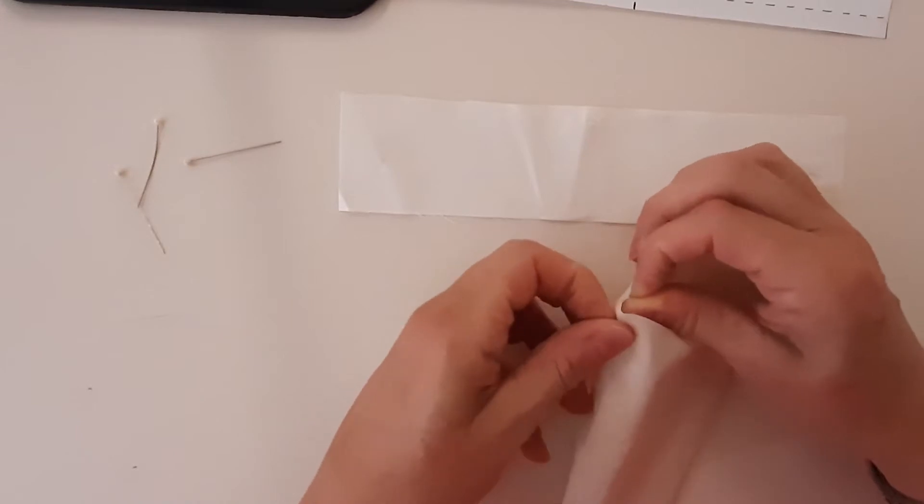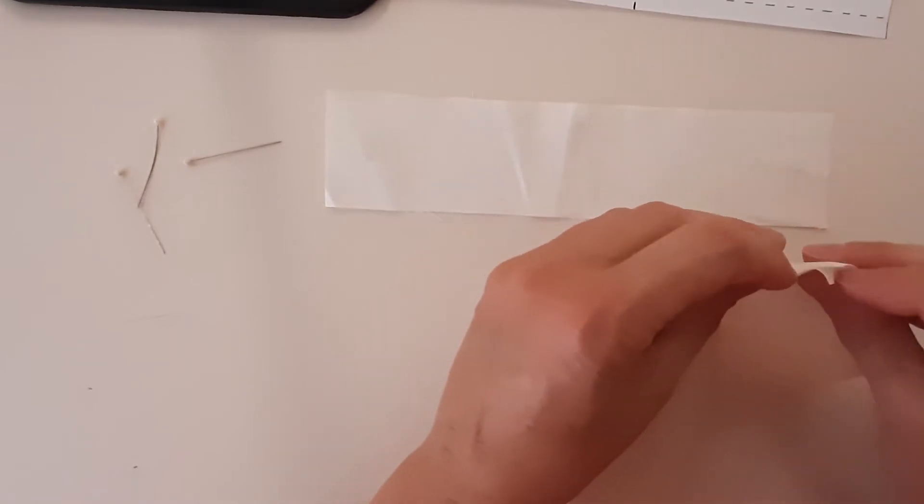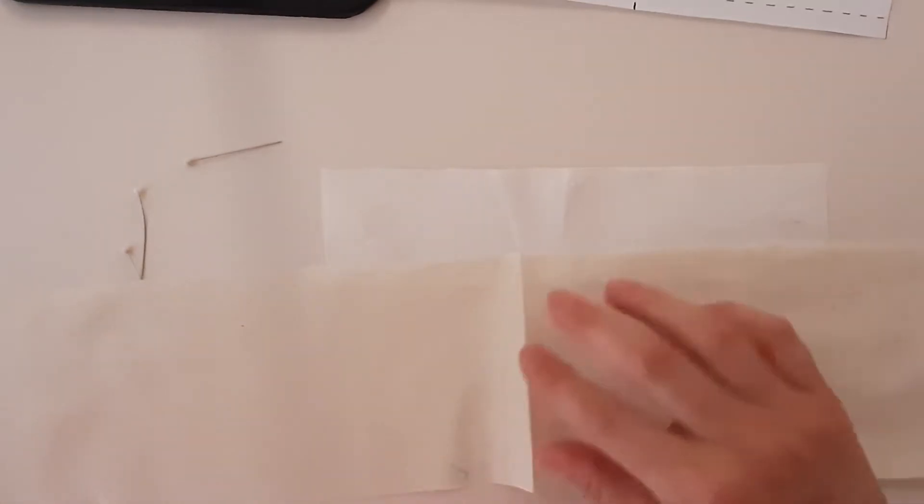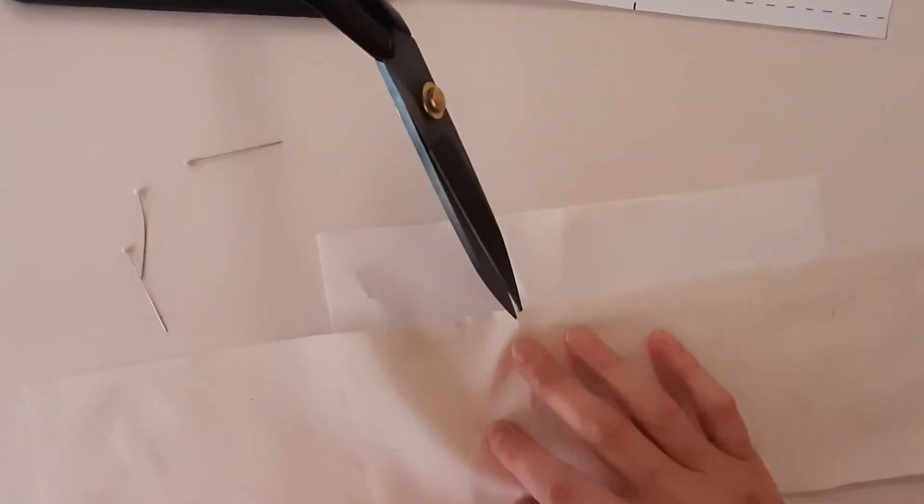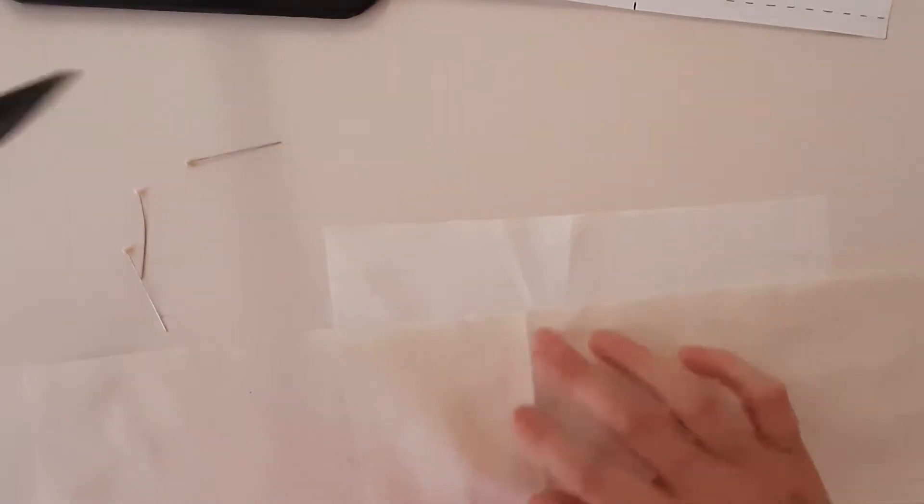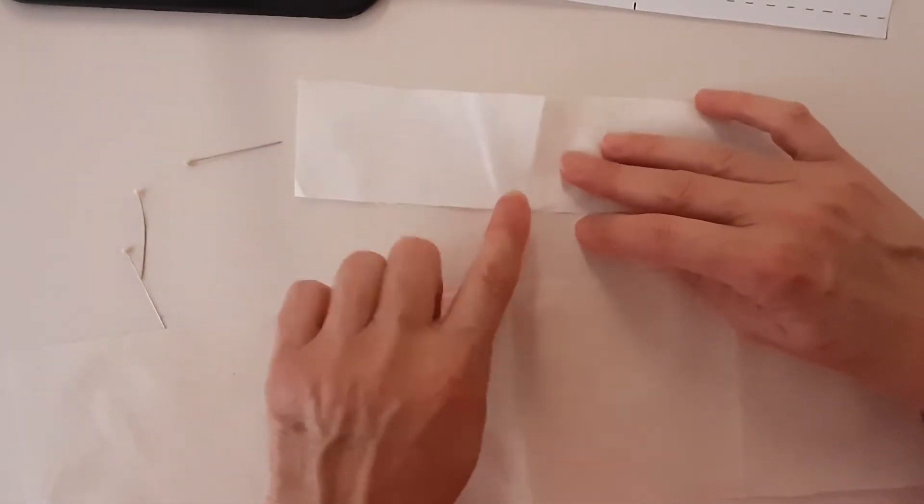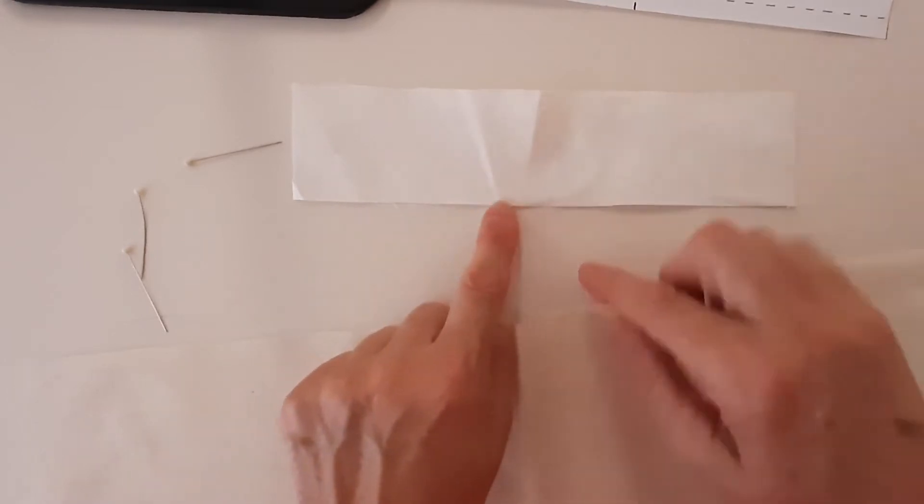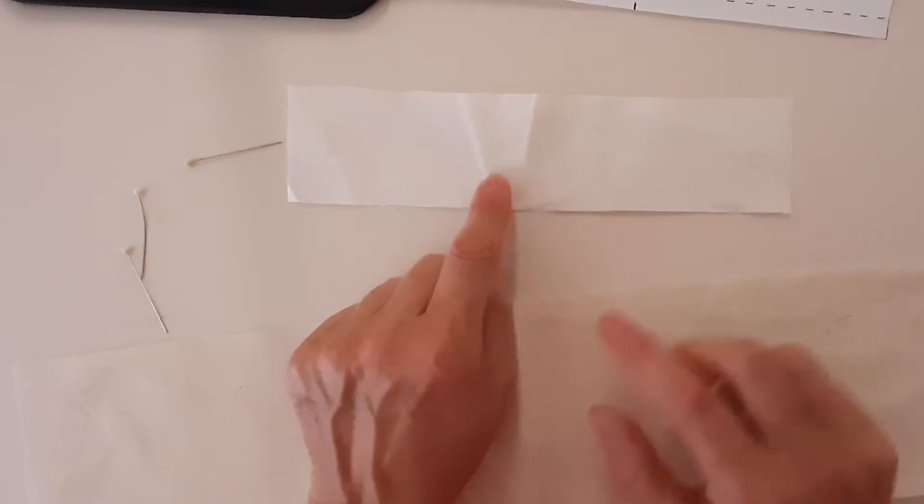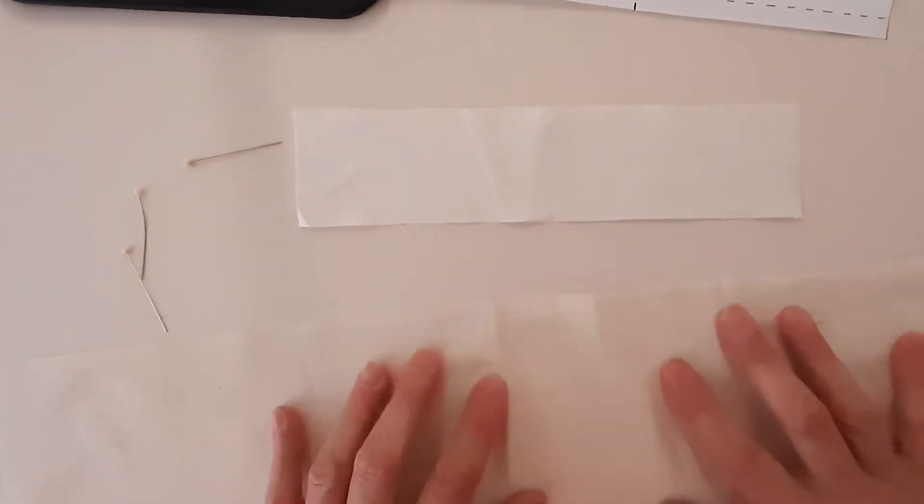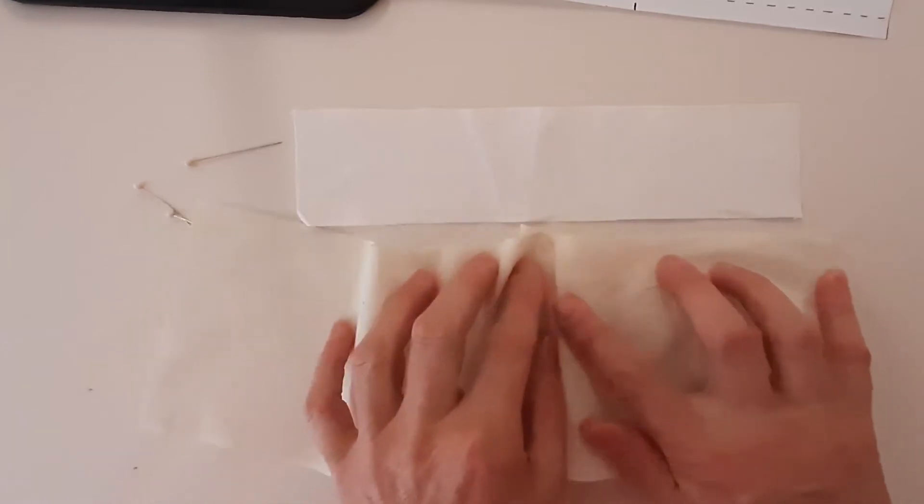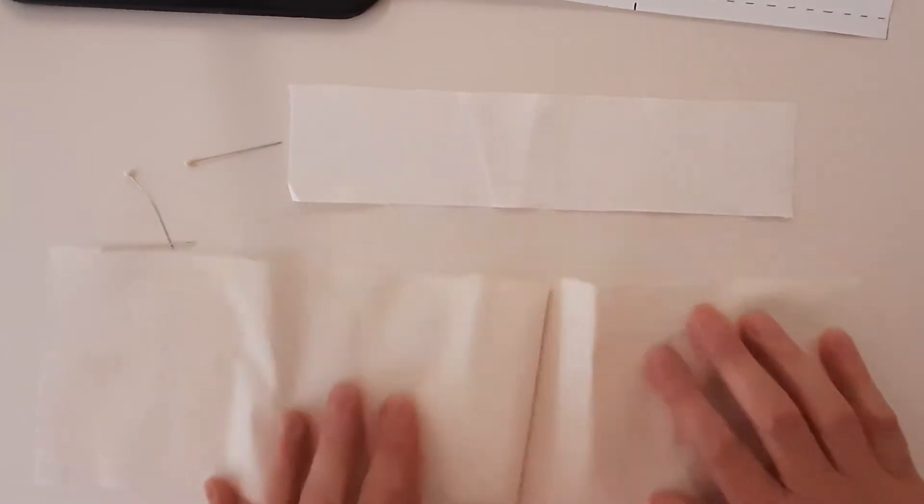One thing you want to get into the habit of doing when you cut something on the fold is to snip a notch right at that fold line. It's particularly important here because I know that half of my gathers need to go on this side of the foundation piece, and half of my gathered side needs to go on this side of the foundation piece. This eliminates any possibility of there being a flat area and then more gathering in one section.